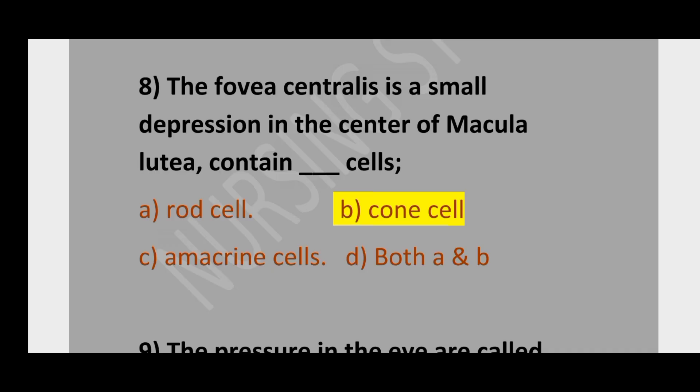Question number 8. The fovea centralis is a small depression in the center of the macula lutea containing: option A, rod cells; option B, cone cells; option C, amacrine cells; option D, both A and B. The correct option is cone cells, option B.